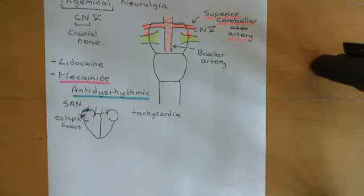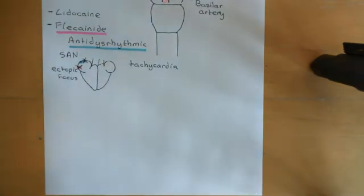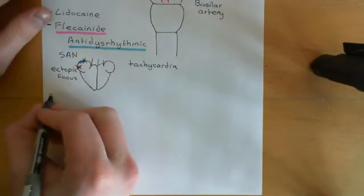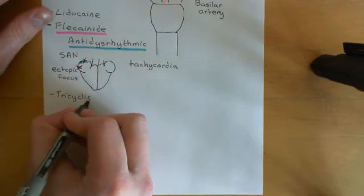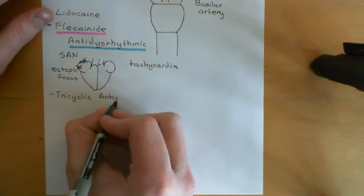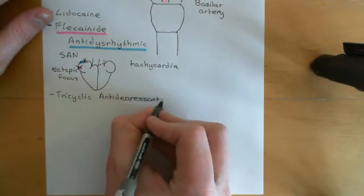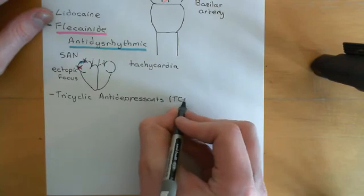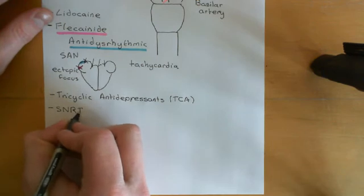Welcome back to this next video in which we are discussing pain and analgesic drugs. We're now going to discuss two final classes of drugs that are used to treat neuropathic pain: the tricyclic antidepressants, abbreviated as TCAs, and the SNRIs, which stands for the serotonin and noradrenaline reuptake inhibitors.